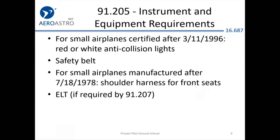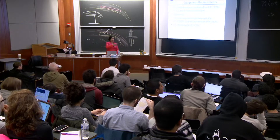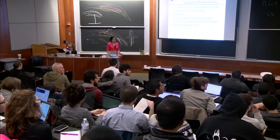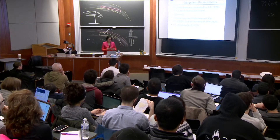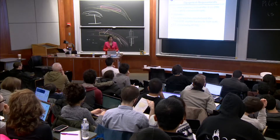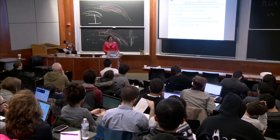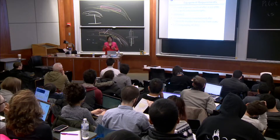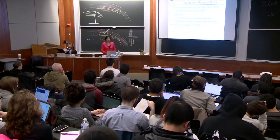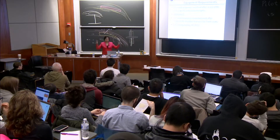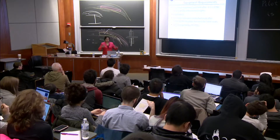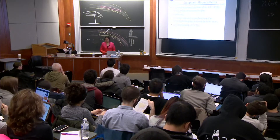You also need anti-collision strobe lights, seat belts, and an ELT. An ELT — emergency locator transmitter — is an emergency device that activates when your aircraft is under duress and descending very rapidly. It emits your location so that people can come and find your aircraft very quickly.